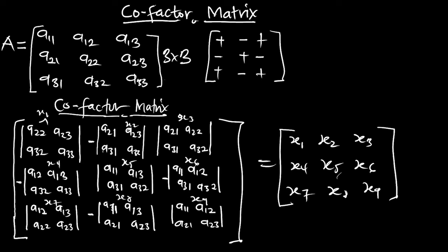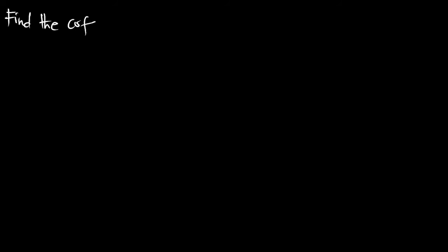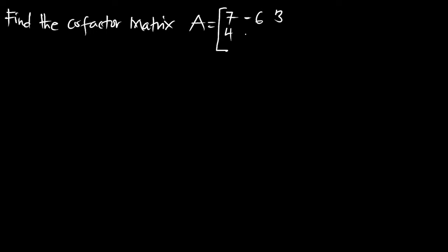Let's take an example. Find the cofactor matrix, given matrix A. Our matrix A is: first row 7, negative 6, 3; second row 4, negative 5, negative 4; third row 2, 1, and 8.